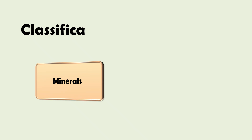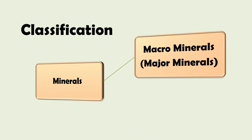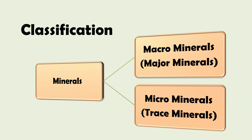There are different types of minerals on the basis of their need and demand by the body. Minerals are classified into macrominerals, also known as major minerals, and microminerals, also known as trace minerals. Let's see both of them and in which quantity they are required by our body.